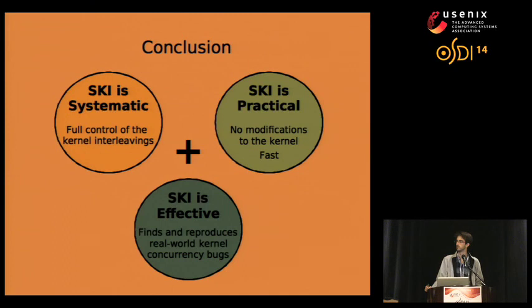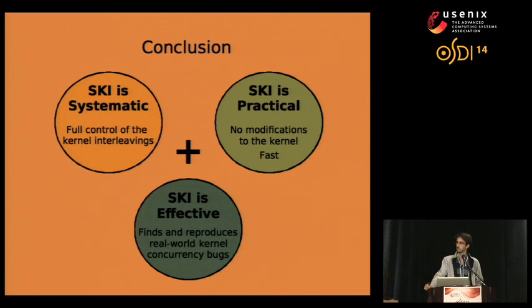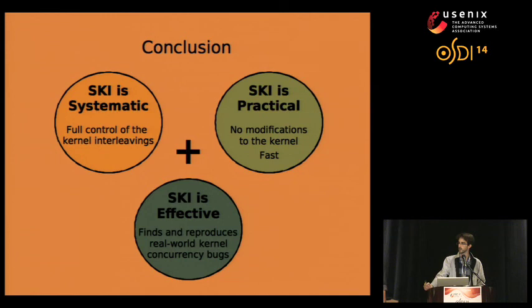Audience member: I have questions regarding the number of threads used for testing. I assume you have a thread running on each CPU, so the number of CPUs restricts the kind of races you're looking at. How would you catch concurrency bugs which are interleavings of many more threads than the number of CPUs in your simulation? Speaker: We implemented Ski on QEMU, which supports a very large number of virtual CPUs, so in practice this is not a problem. It has also been shown that the vast majority of concurrency bugs can be triggered with just a few testing threads.